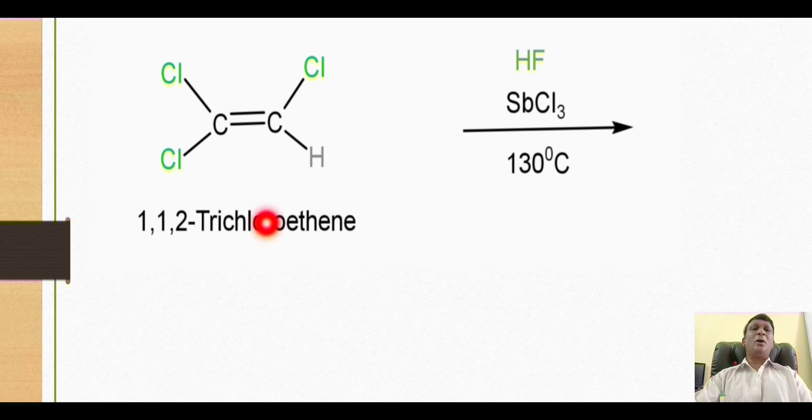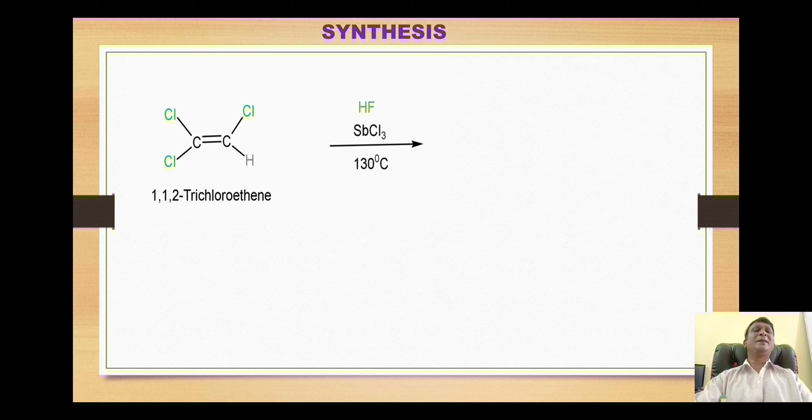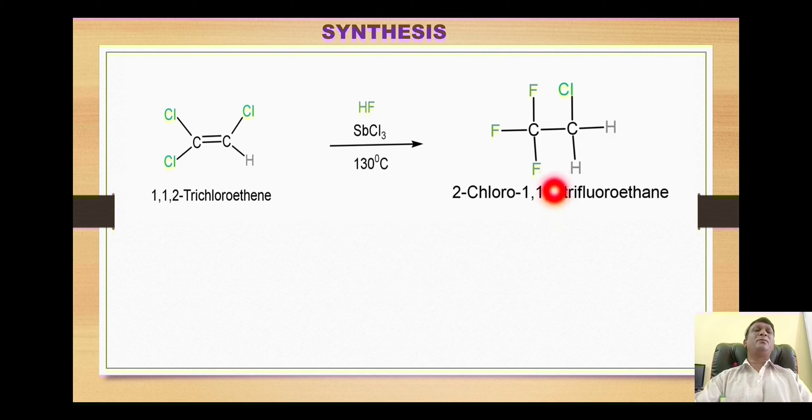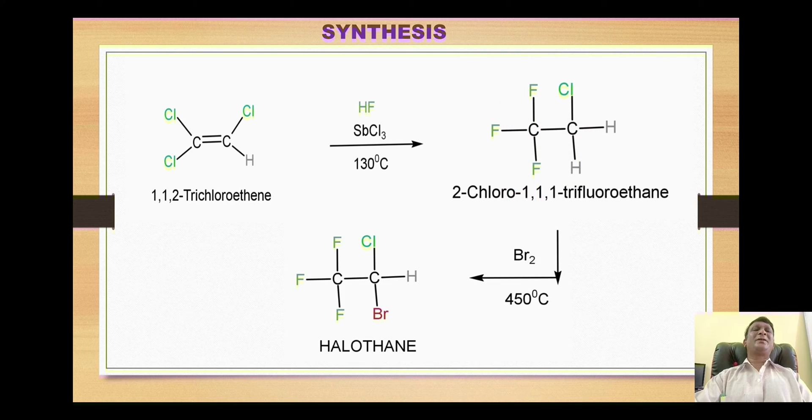When the addition of fluorine takes place, subsequently these two chlorines of the corresponding ethane derivative are substituted by nucleophilic substitution reaction with fluorines. We get attachment of three fluorine atoms, giving us formation of this derivative called 2-chloro-1,1,1-trifluoroethane.